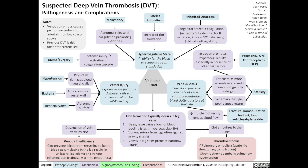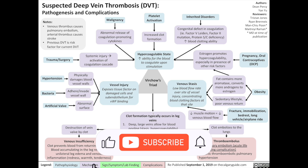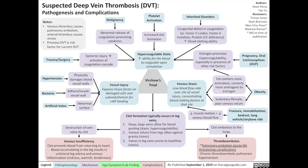Assuming all three of Virchow's Triad are met, blood will clot, and typically will clot in the leg veins. Why? Because these veins are deep and large, allowing for more blood pooling, which contributes to venous stasis and hypercoagulability. Venous return from the legs often goes against gravity, which reduces the rate of blood flow through these veins, contributing to venous stasis.